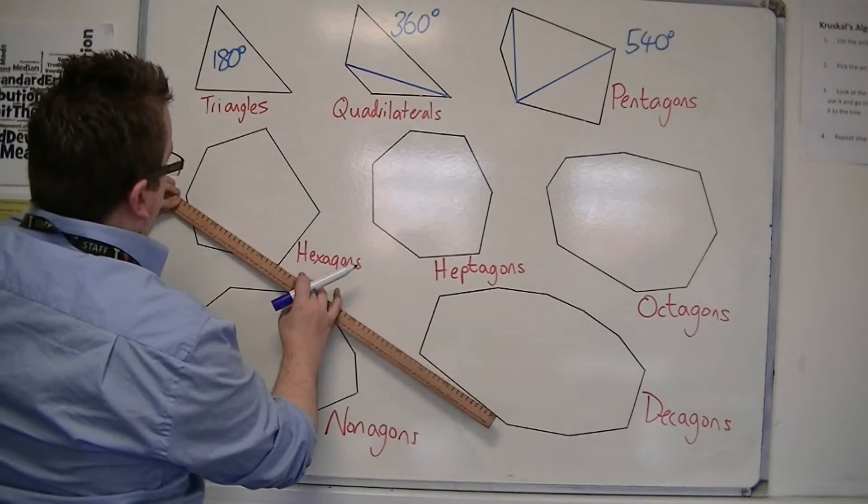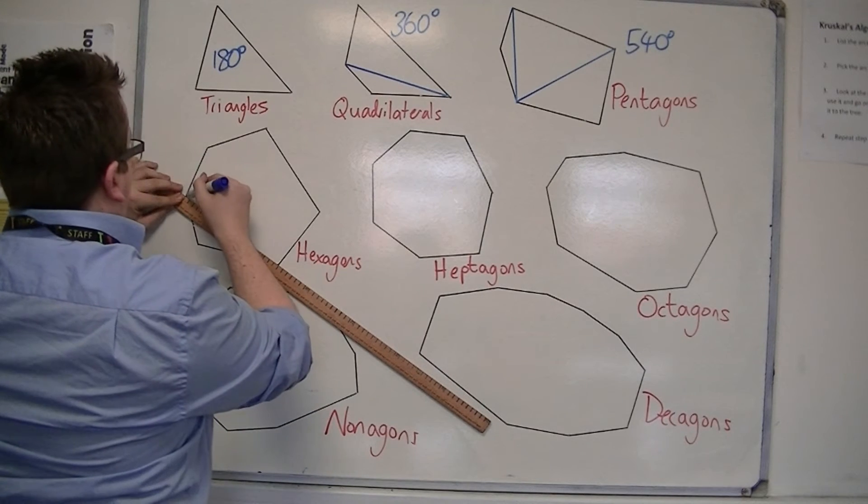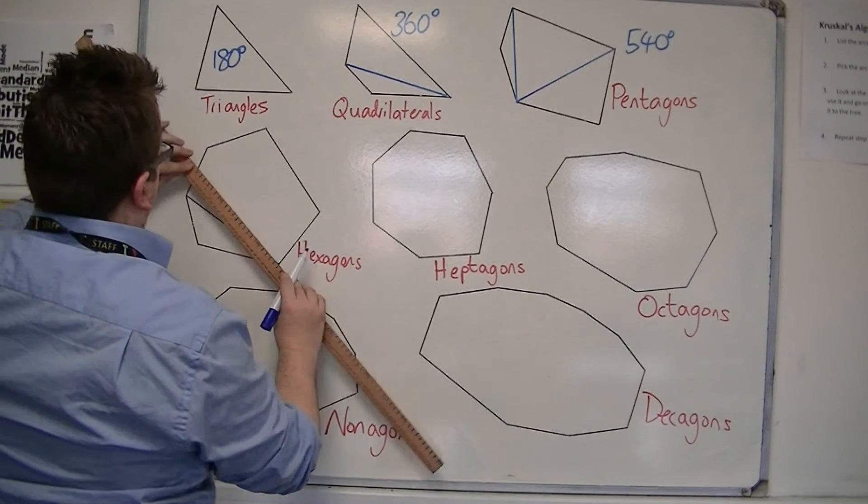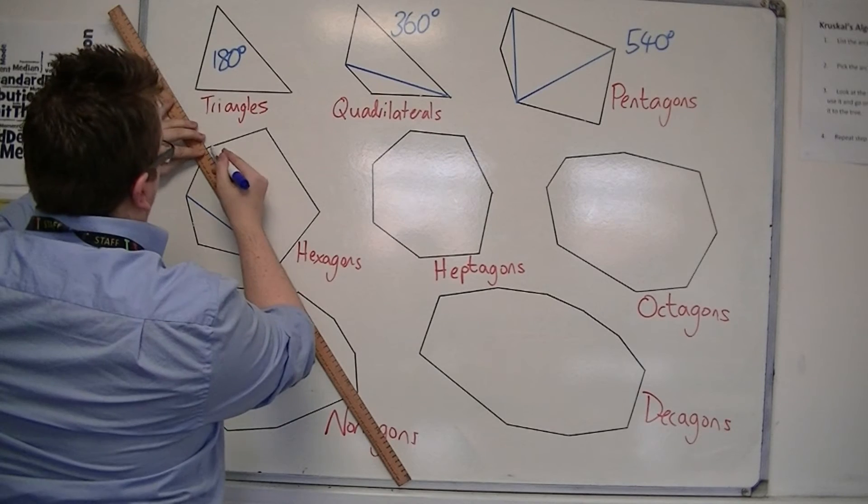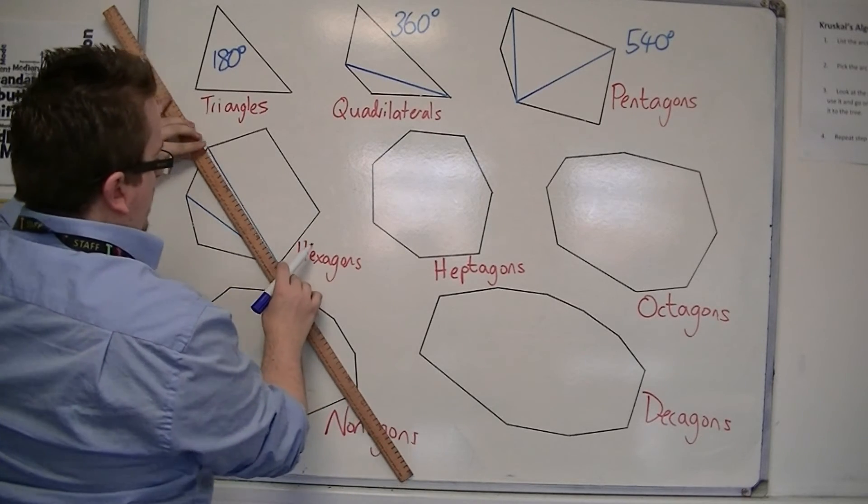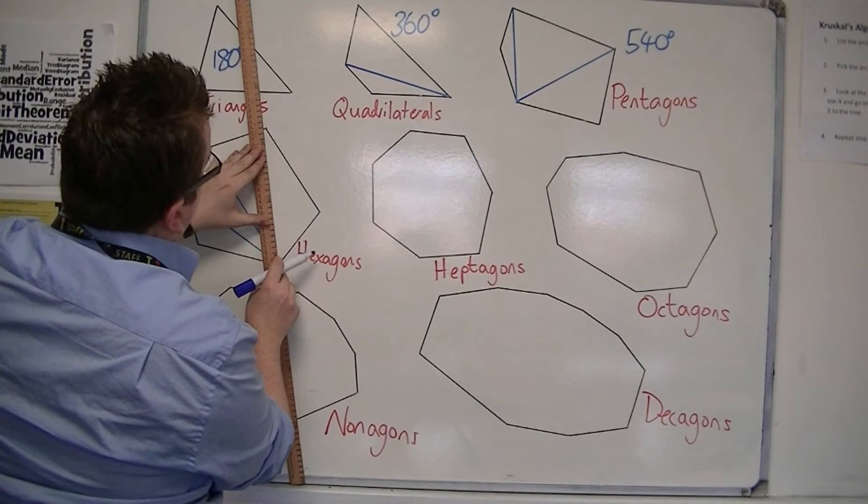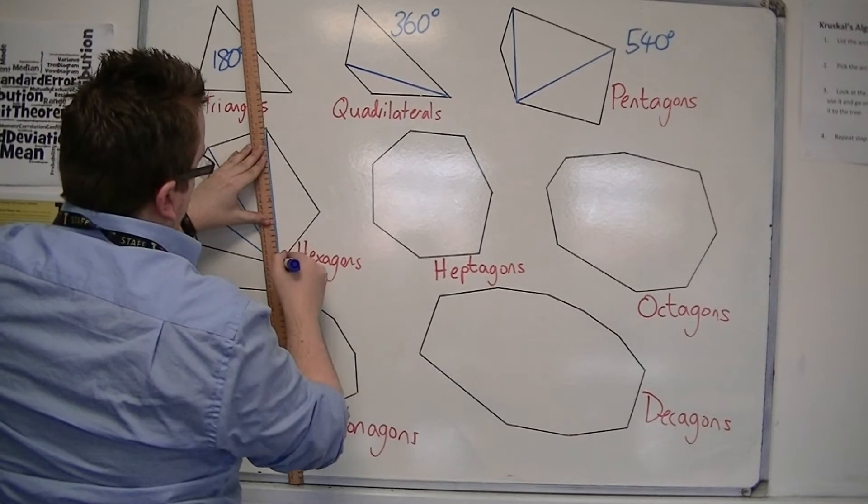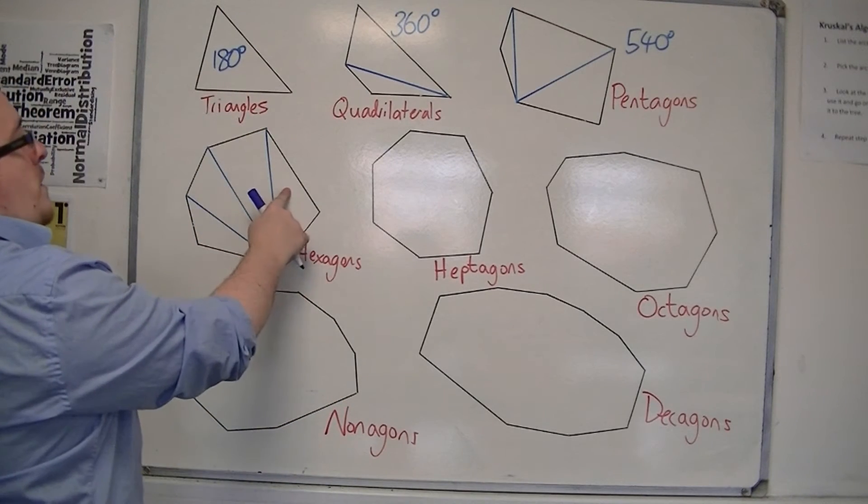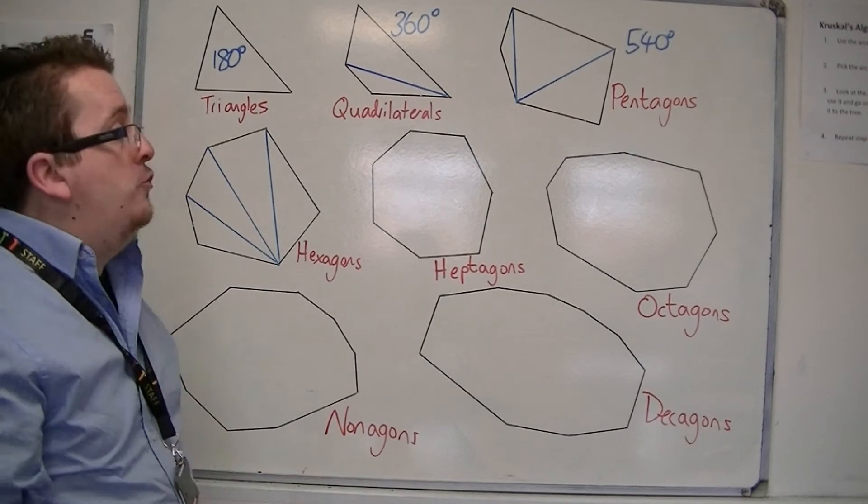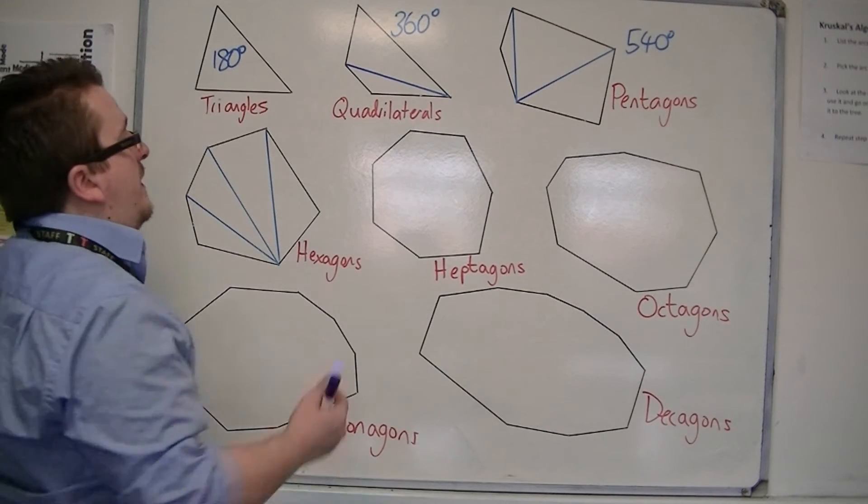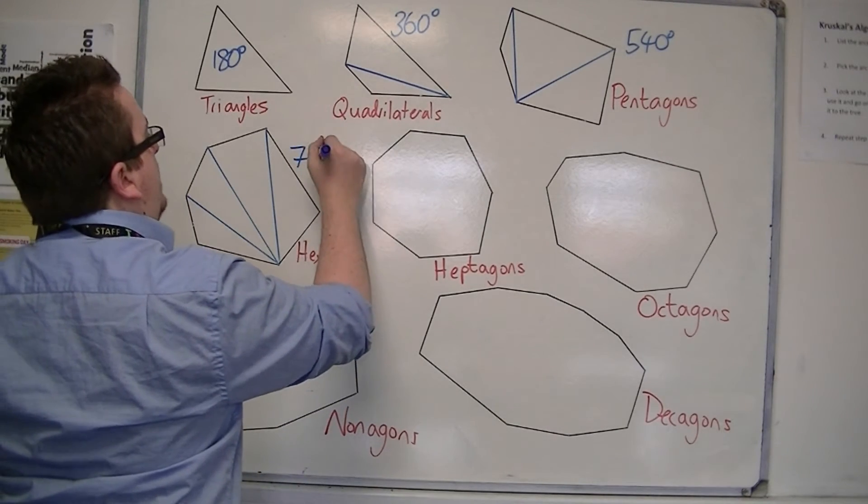So for a hexagon, we have one more triangle. Notice how I'm drawing them all from one corner. So this time we've got four triangles. So that's four lots of 180, so that would get us to 720 degrees.